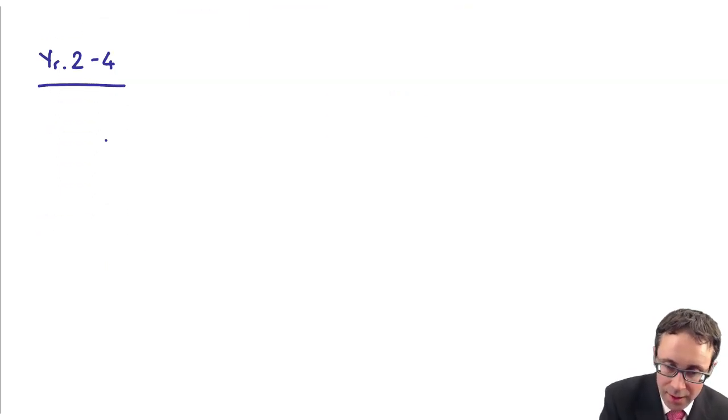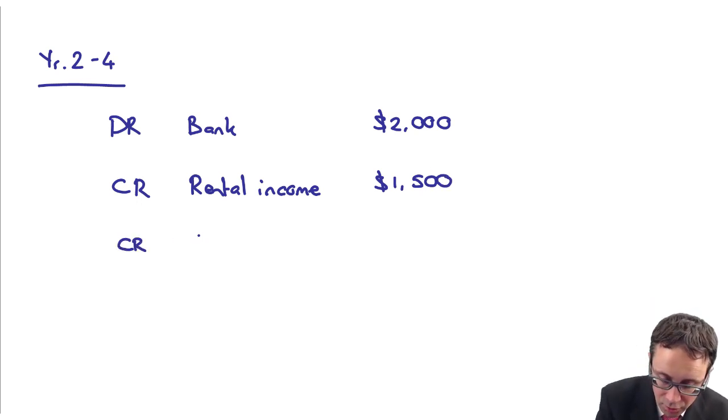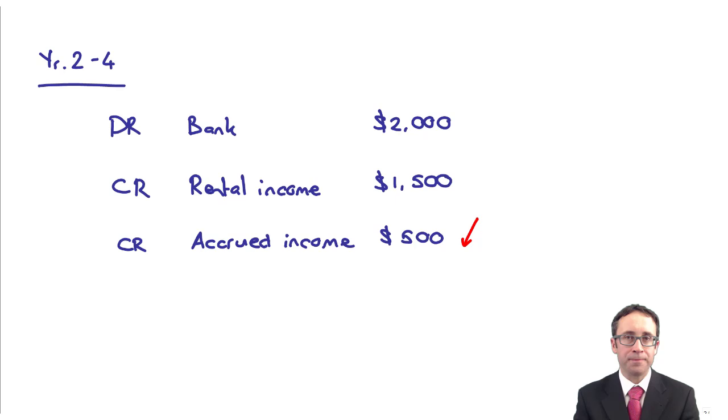is we are going to go through each year and receive $2,000 from the bank, so debit the bank with $2,000. I will credit my rental income with $1,500, and then what we do each year is we credit our accrued income with $500, and what that does, that credit will reduce the accrued income.